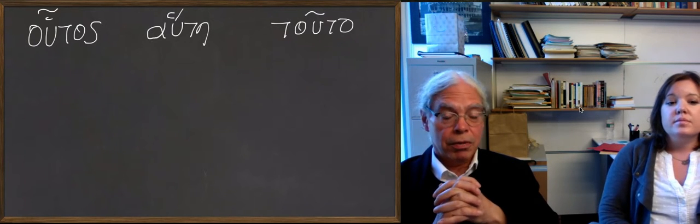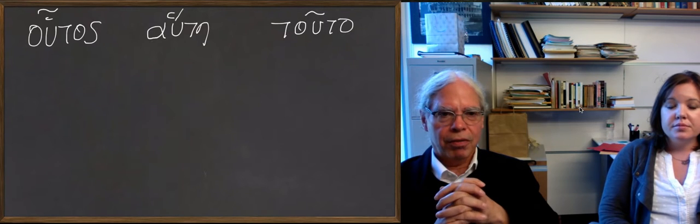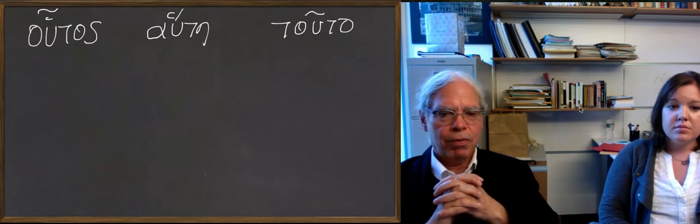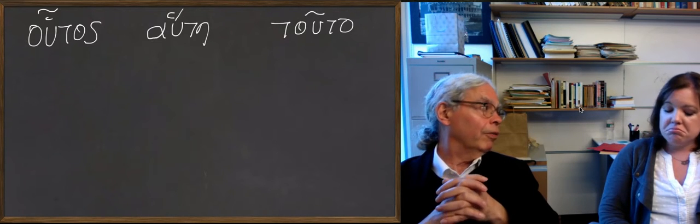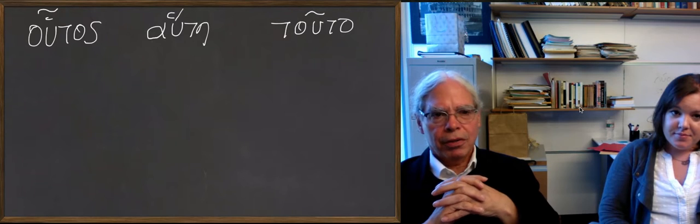The article was originally a word that meant this, okay? And it got displaced by hāde and has other functions in ancient Greek, and this is a weak demonstrative, if you will. The word for the is also a pointing word, right? But anyhow, let's get back to houtos, hautē, touto. There's something funny going on here.